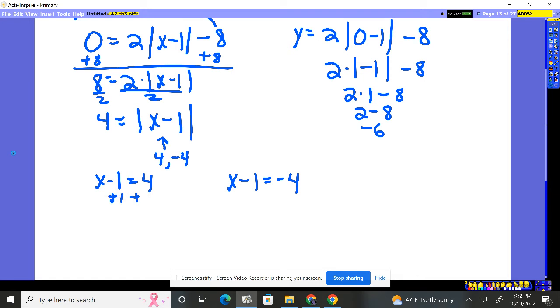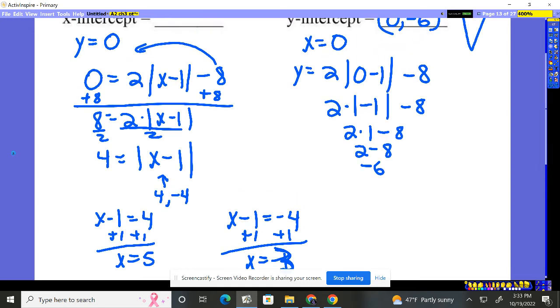Solving this, x minus 1 equals 4. Add 1 to both sides. 5 is one piece. Or x minus 1 equals negative 4. Add 1 to both sides. Or it could be negative 3. So 5 or negative 3. X being 5 or negative 3.